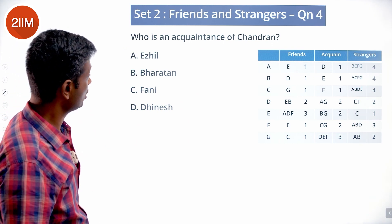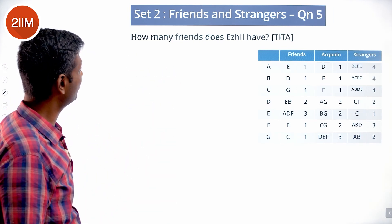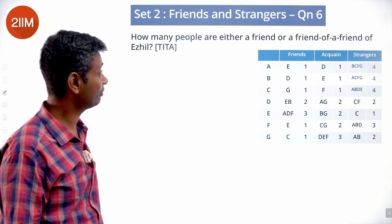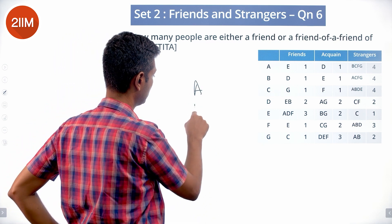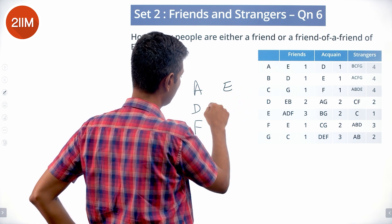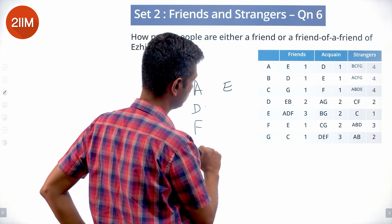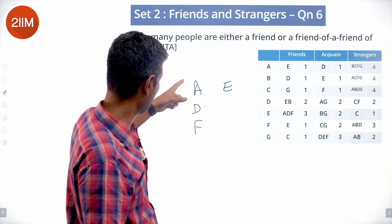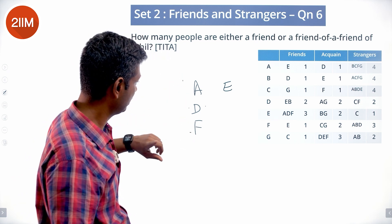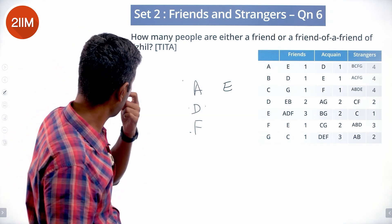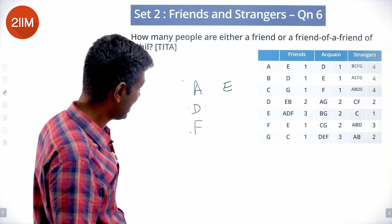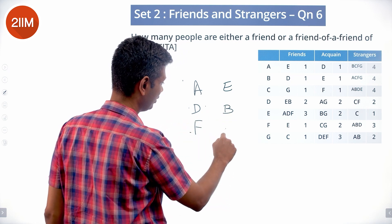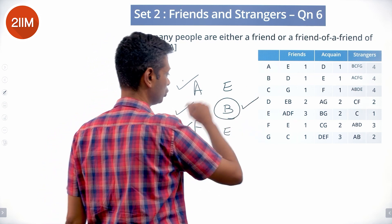Who is an acquaintance of Amudha? D — Dinesh. Who is an acquaintance of Chandran? Chandran's acquaintances — F, Fani. How many friends does Edil have? Edil has three friends: A, D, F. How many people are either a friend or a friend of a friend of Edil? Edil has three friends A, D, F. A has E as a friend; D has B as a friend; F has E as a friend.